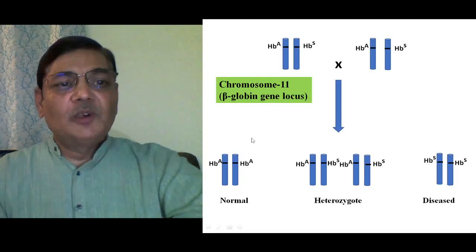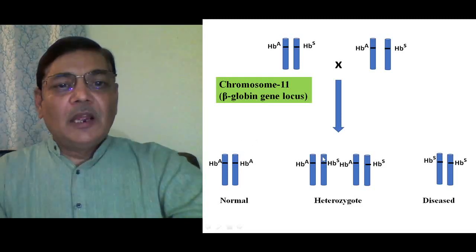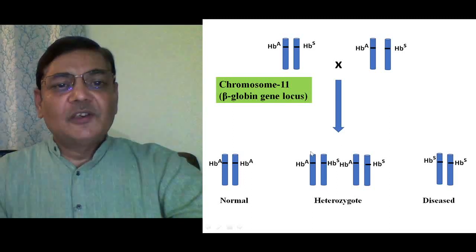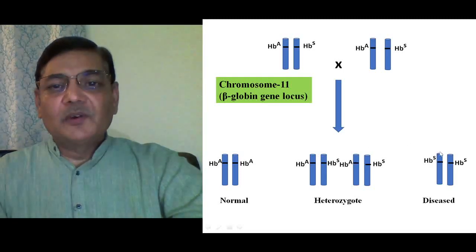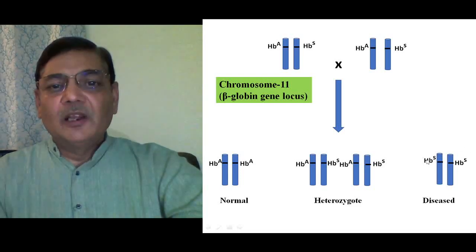Their RBCs will look perfectly normal in shape. Fifty percent of the children will have a chance to be heterozygous, with genotype HbA HbS. And the remaining 25% of the children will be suffering from sickle cell anemia, with genetic makeup HbS HbS.